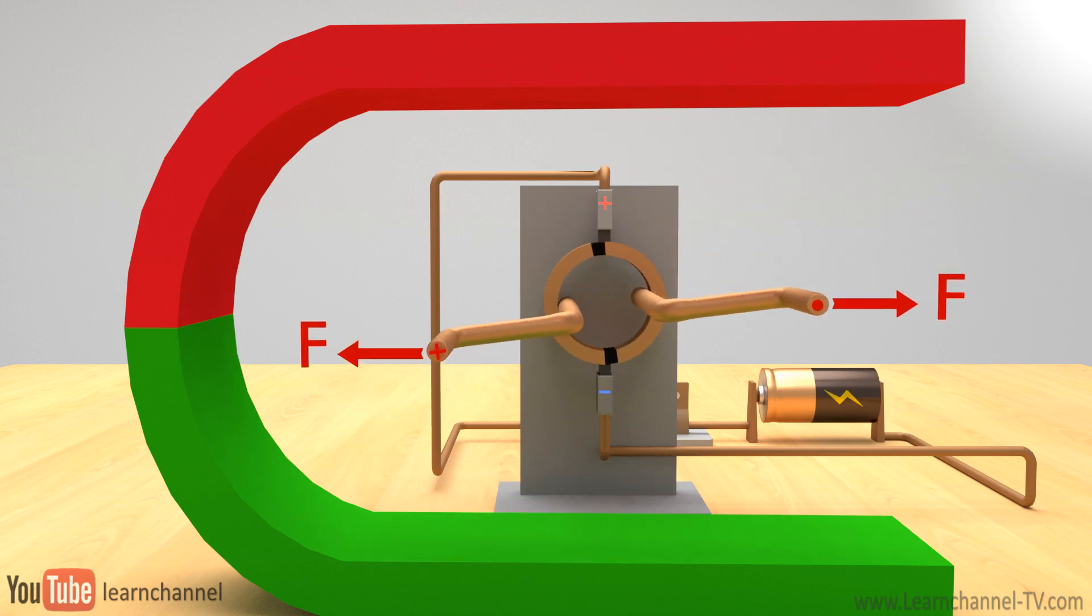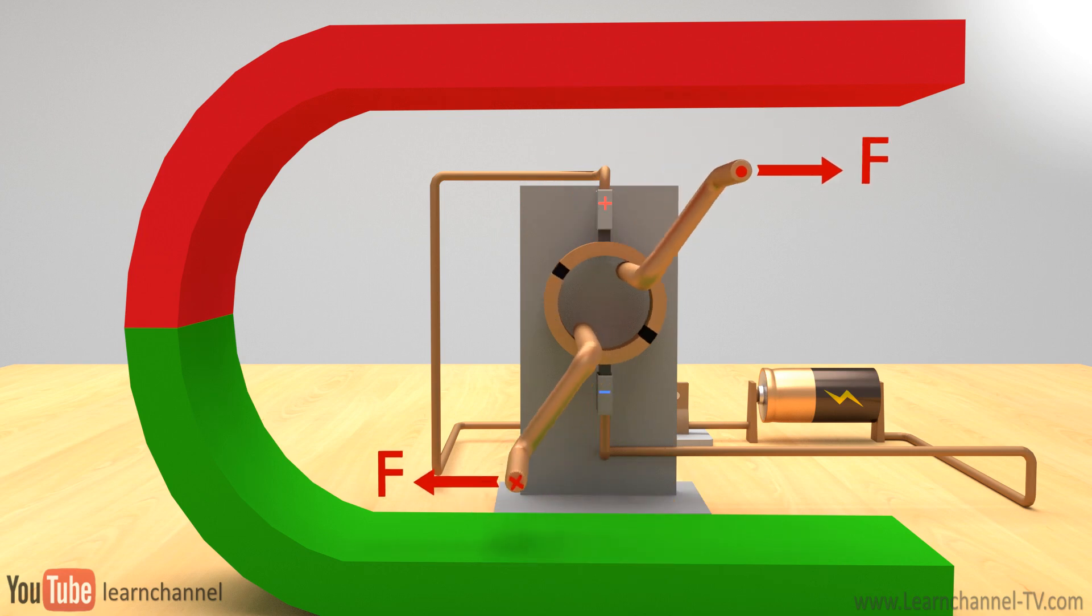As a result, the commutator rings get interchanged with their contacts to the brushes. Therefore, the current continues to flow in the same direction and you keep the direction of the torque.